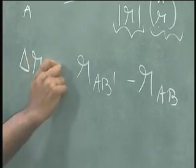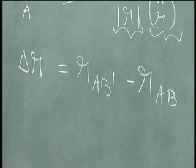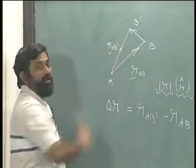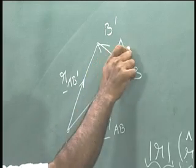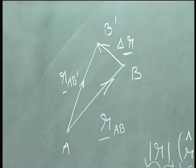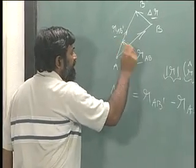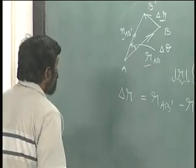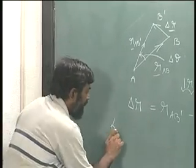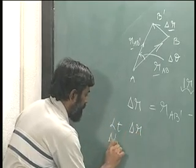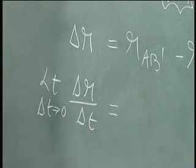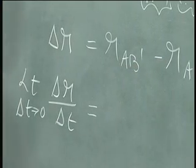Let's call that change as delta R. What would be delta R here? Naturally, R_AB plus a vector delta R will give me R_AB prime, so this should be delta R. What is this angle? Let's take this angle to be delta theta. We will use this in order to find out the time derivative. The limit as delta R over delta t as delta t tends to zero is what we want.